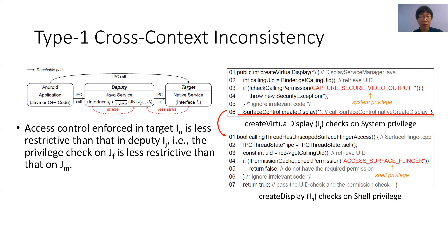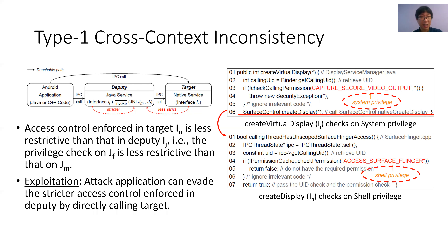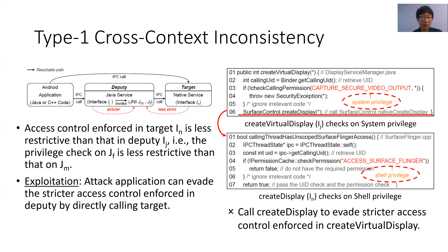The deputy createVirtualDisplay internally calls the JNI method nativeCreateDisplay, whose corresponding JNI function will invoke the target createDisplay. The access control on the JNI method is checked at the system privilege level, while the access control on the JNI function is checked at the shell privilege level. Accordingly, since the access control enforced on the JNI function is less restrictive than that on the JNI method, a type 1 inconsistency is found. An attack application can exploit the inconsistency to bypass the access control enforcing deputy by directly calling the target. For this case, the attack application can call the target createDisplay of SurfaceFlinger service to create a secure virtual display, bypassing the access control enforcing deputy createVirtualDisplay of display manager service.